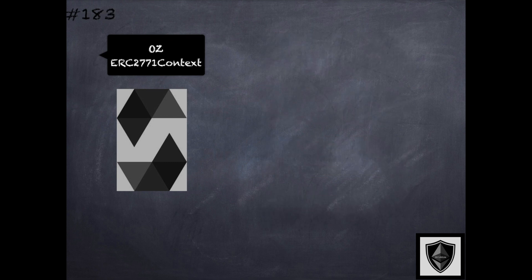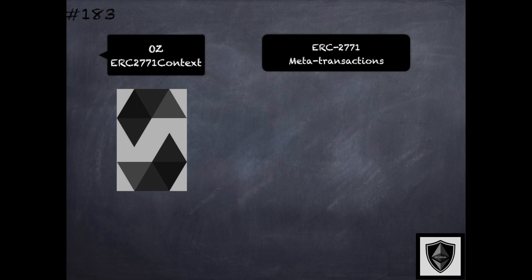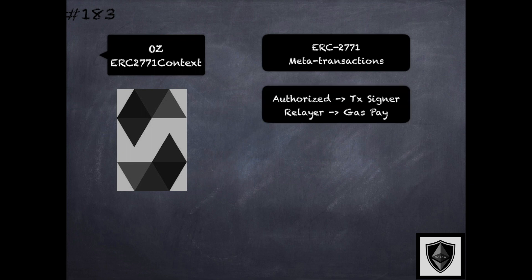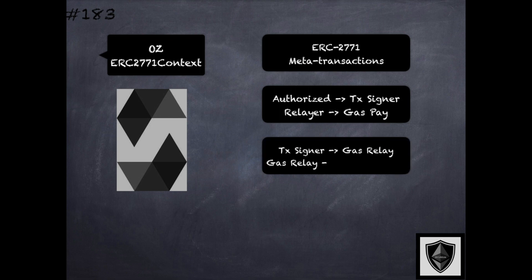The ERC 2771 context library provides a variant of the context library specific to ERC 2771, which provides support for meta transactions. At a high level, there is a transaction signer who originates transactions by signing from an externally owned account and sends the signed transactions to a relayer off-chain. This relayer is responsible for paying the gas. The ERC 2771 specifies a secure protocol for a contract to accept such meta transactions, concerned about the gas relayer forging, modifying, or duplicating requests sent by the transaction signer.